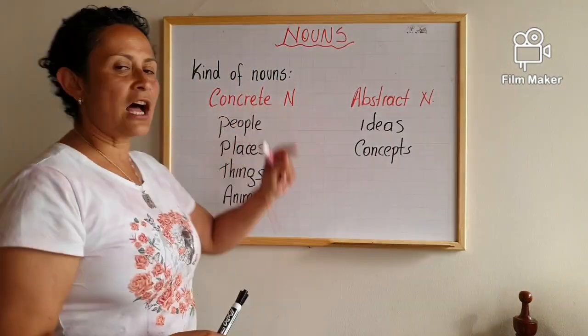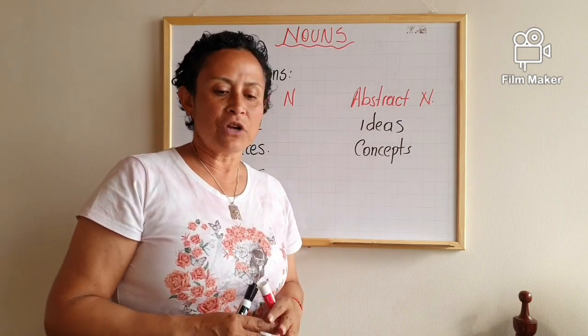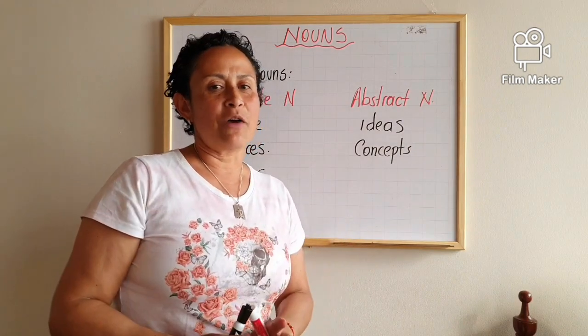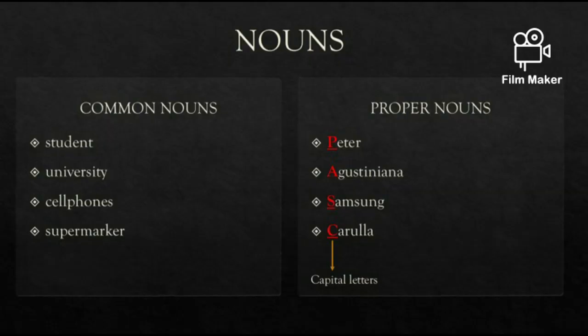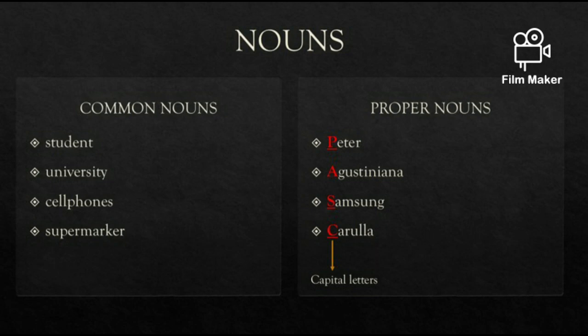Remember: concrete nouns and abstract nouns. Now it's time to talk about common nouns and proper nouns — this is the second part of the lesson. We can have common nouns and proper nouns referring to people, places, things, or animals. Common nouns include student, university, cell phones, and supermarket. Proper nouns refer to a specific noun — we are giving a name to someone or something, for example: Peter, Agustiniana, Samsung, Karuya. Notice that all proper nouns start with a capital letter.